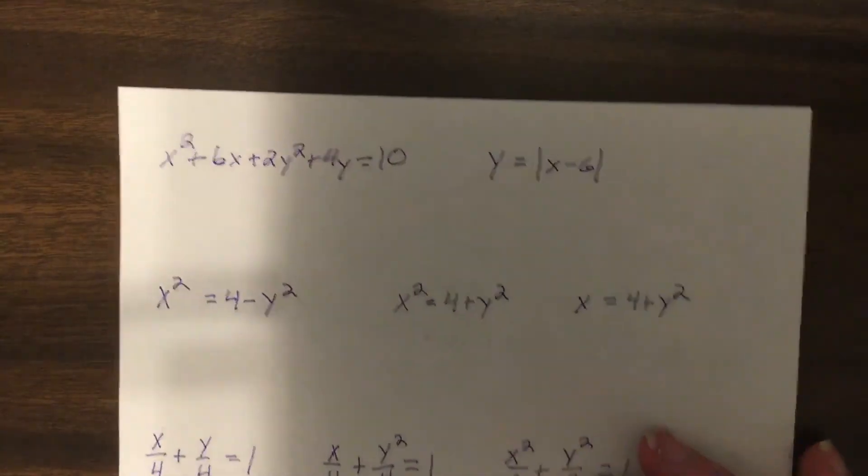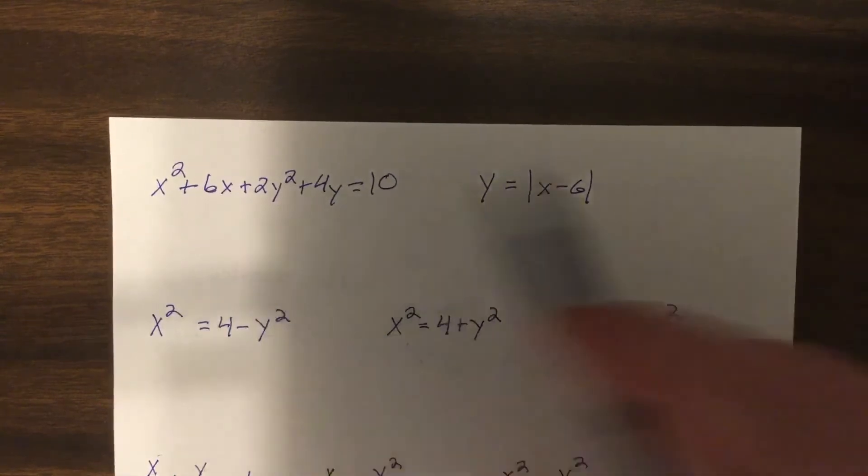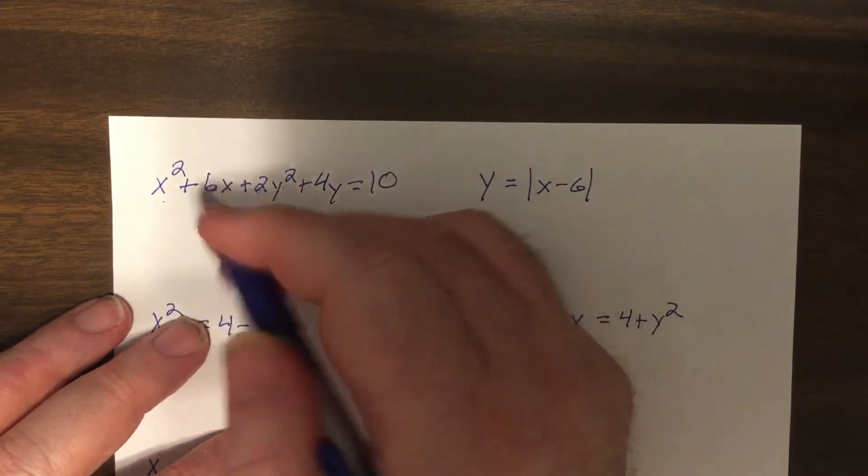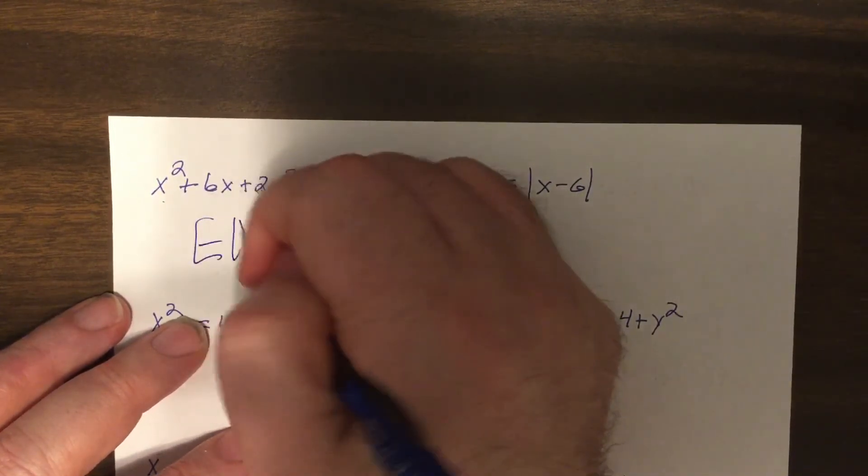So, for these five, right now, name them. I'll give you a couple seconds. Okay, you should be able to do this, like five seconds a problem. So, we have square plus square, different coefficients, so it's an ellipse.